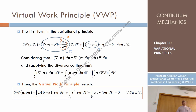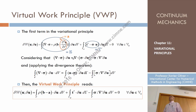Let's operate a little bit. I just account for the virtual board principle, as I have stated here. And now I do some operations here. I have this part here — I have gradient of sigma times differential of u. This one term does appear here. This term I operate: it can be proven that it can be written as the divergence of sigma times delta u, minus sigma double dot symmetric gradient of delta u.